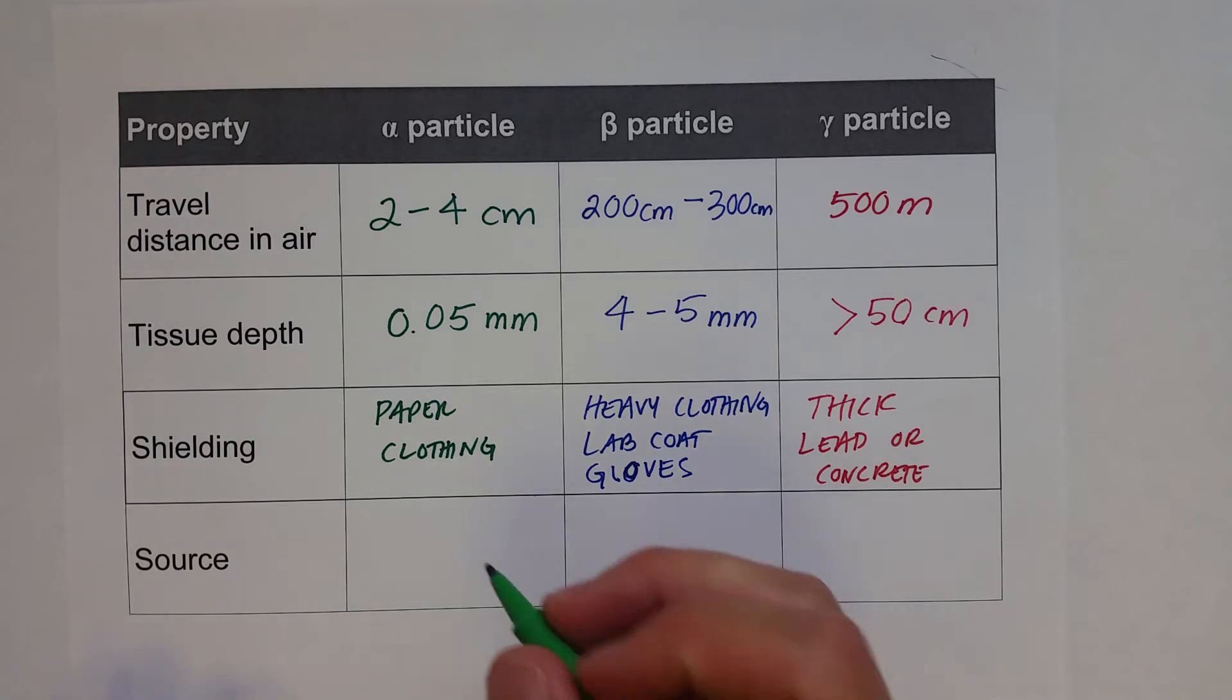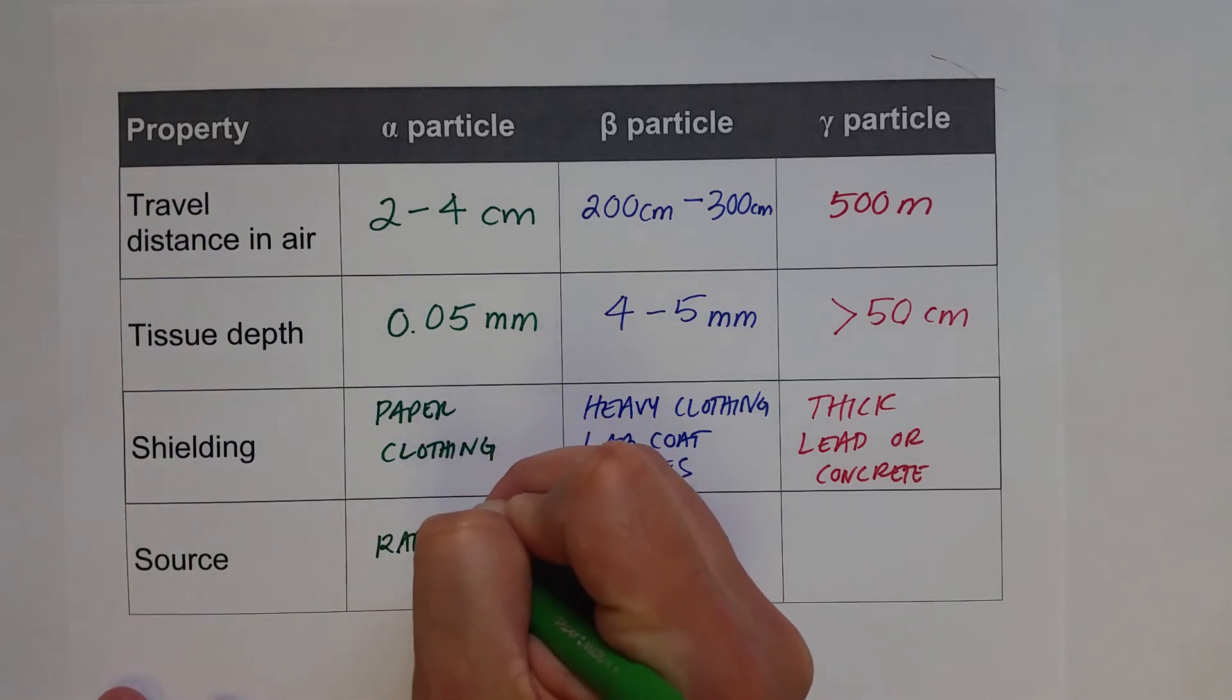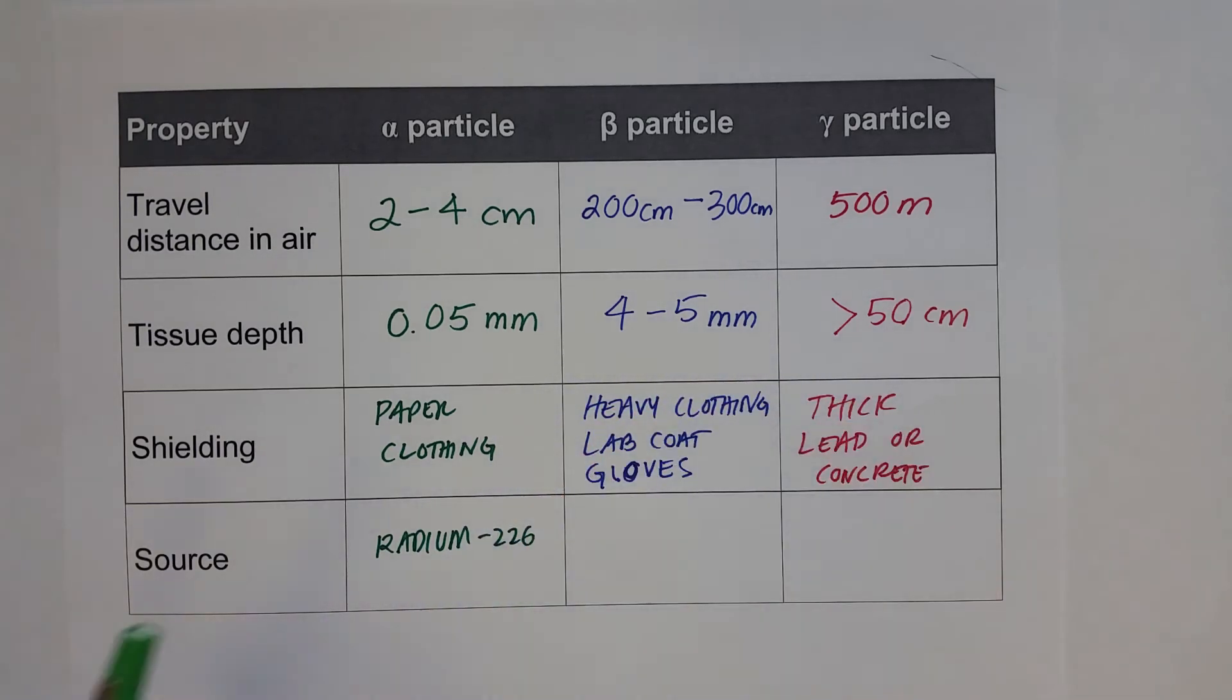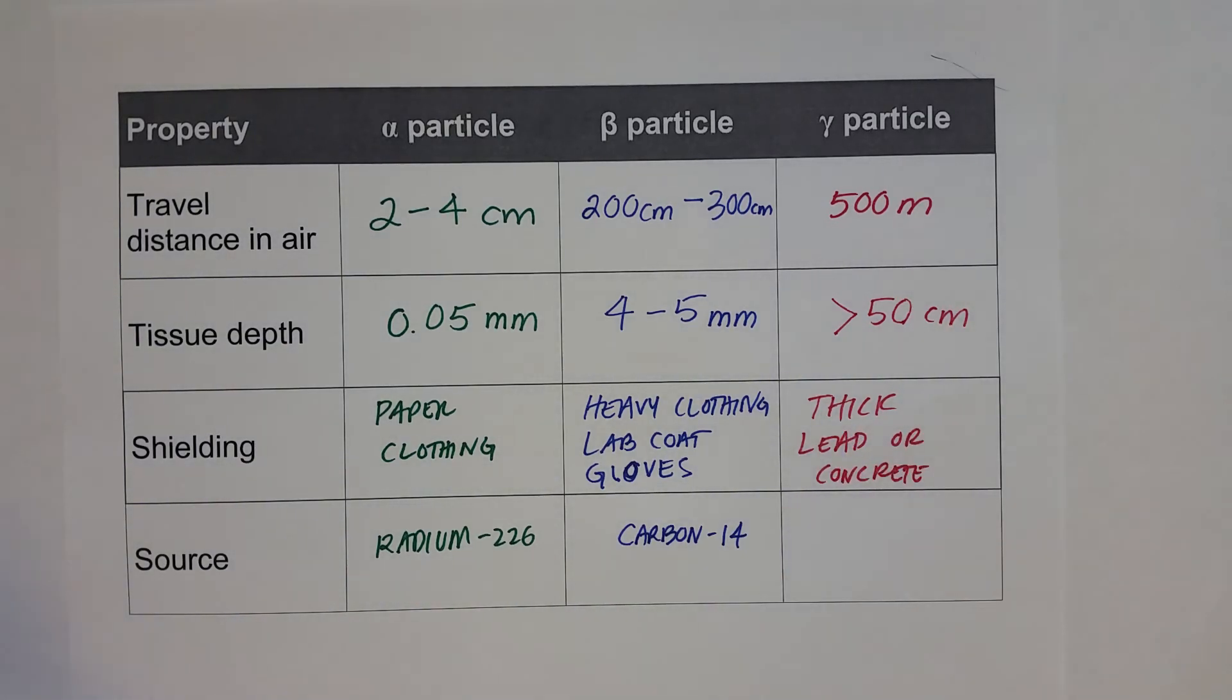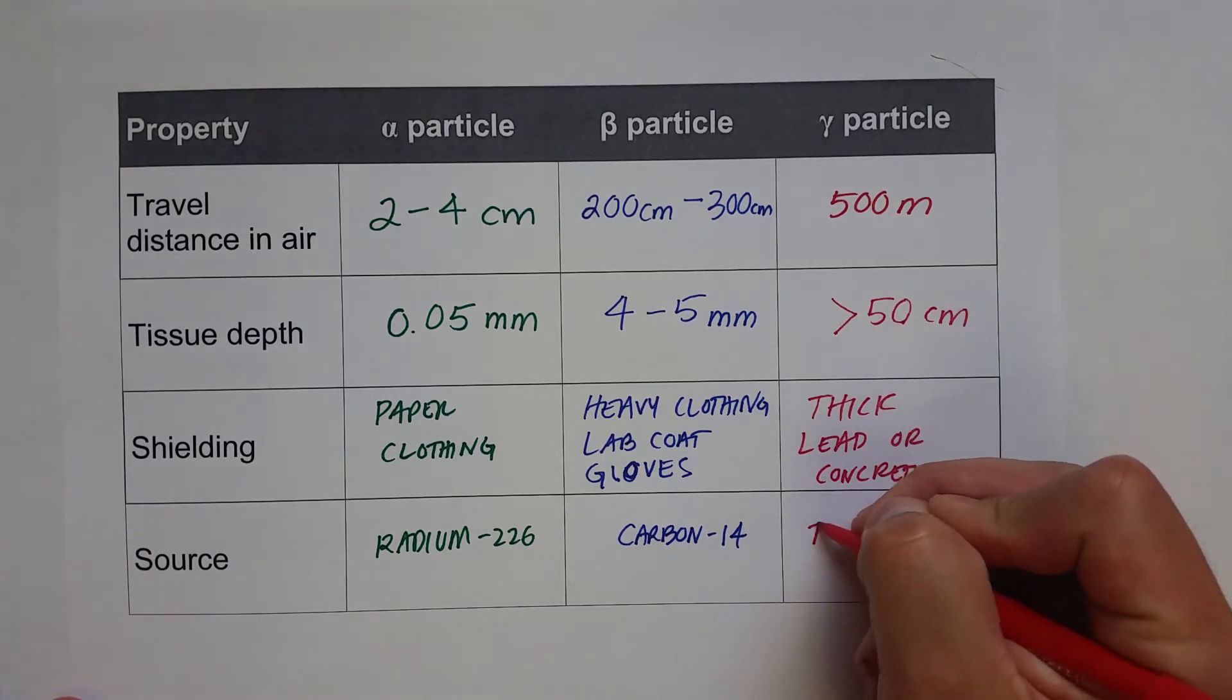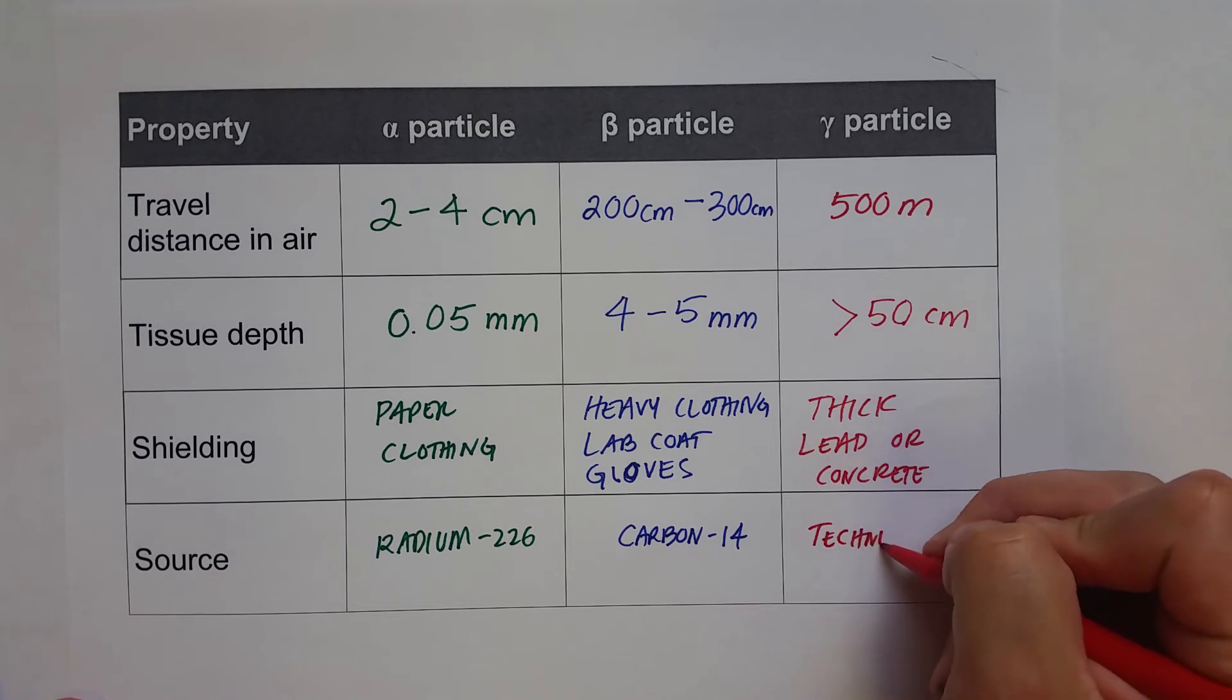And the sources for alpha particles, radium-226 is a common source for alpha particles. Beta particles, carbon-14, used for carbon-14 dating. And then, a very common gamma ray emitter that's used in the medical field is technetium-99.